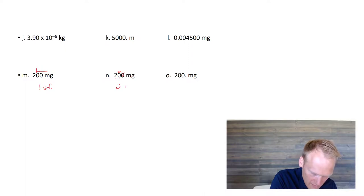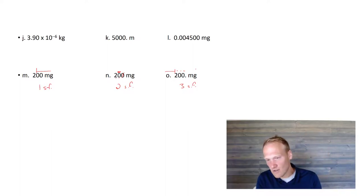And then here's 200 with a decimal, which means we'd come from the left, we'd start counting at the 2. We'd count all 3, and this would have 3 sig figs. So there's a circumstance where you have 3 different numbers, or well, they're 3 same numbers, but because of the way that scientists wrote them down, they're showing that their measuring device had different levels of precision and accuracy.